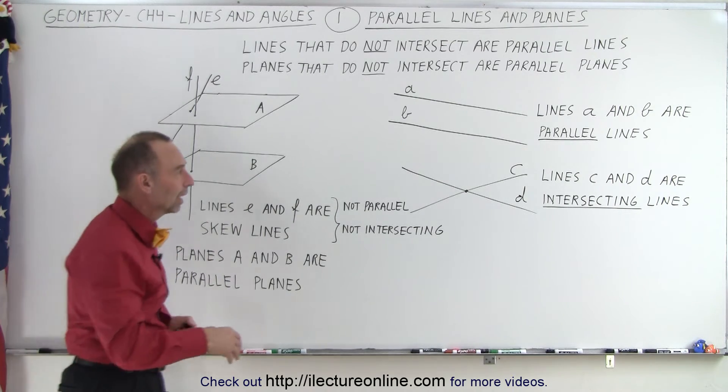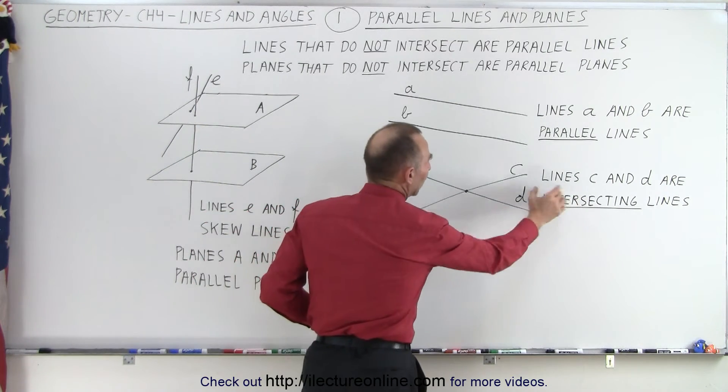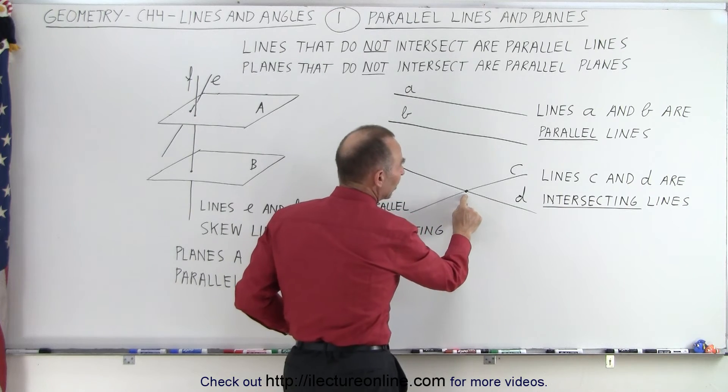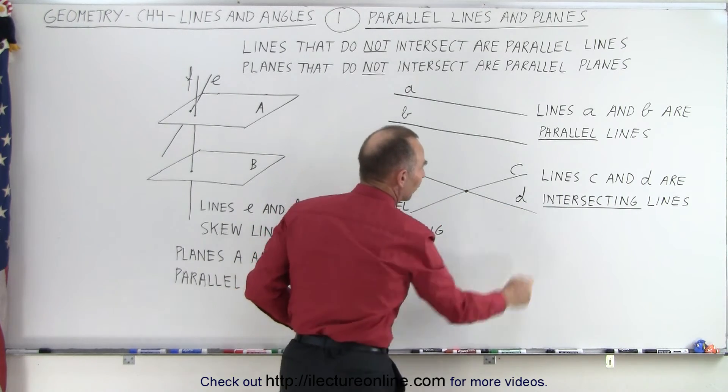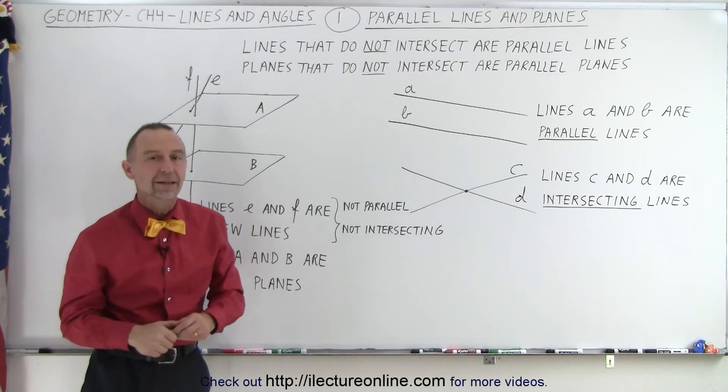So some basic definitions. We need to remember that if lines do intersect, they only intersect at one single point. Therefore, they're called intersecting lines.